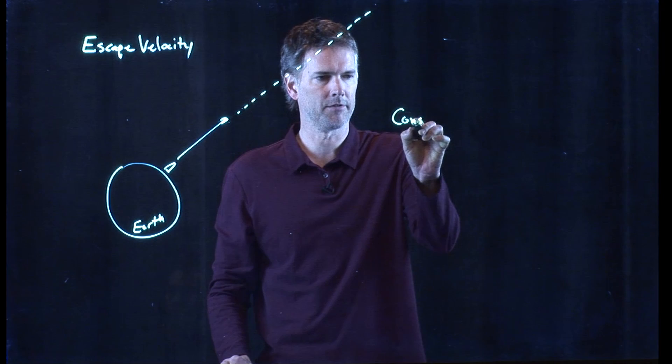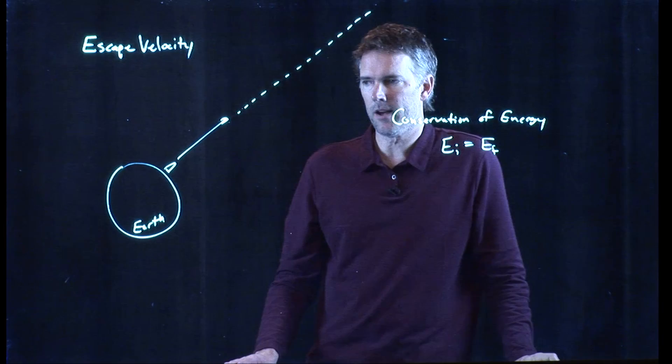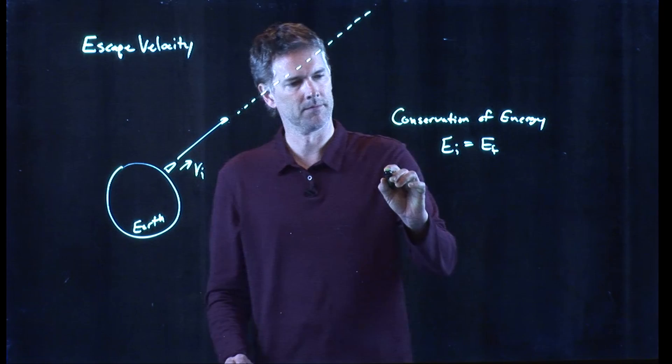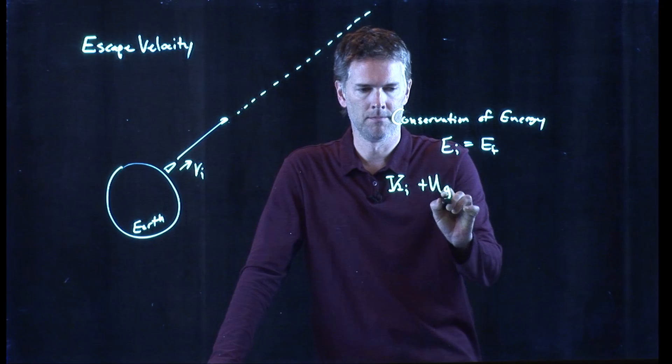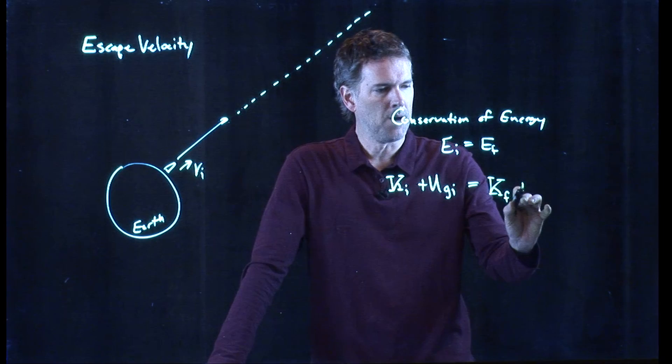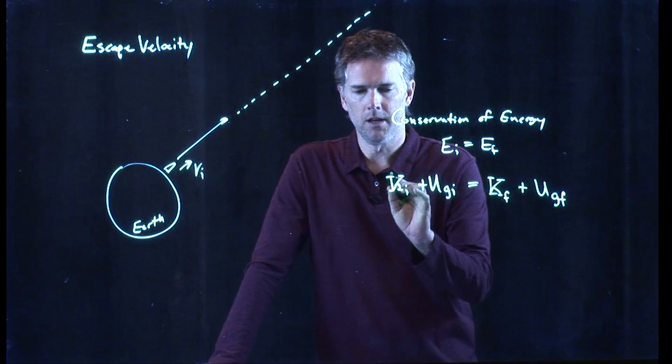Okay, conservation of energy says the following. Whatever energy we have initially has to be there finally. And when we launch this thing and it's taken off at speed VI, it certainly has kinetic energy. But it's also in this gravitational field, and so there is potential energy. When it gets out to some distant location, it might still be moving. It might still have some gravitational potential energy. Okay, let's put in these terms and then we'll see how we can simplify this.